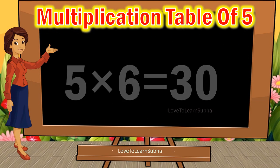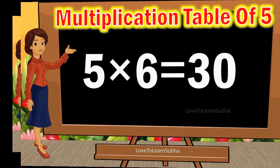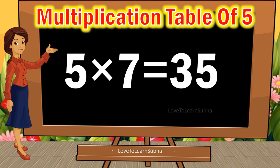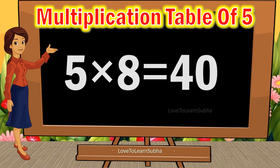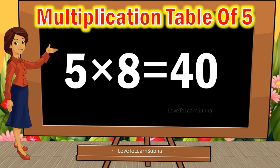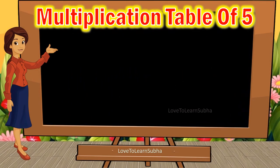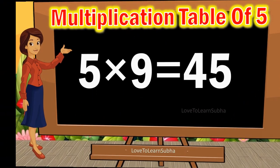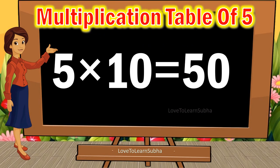5 6s are 30. 5 7s are 35. 5 8s are 40. 5 9s are 45. 5 10s are 50.